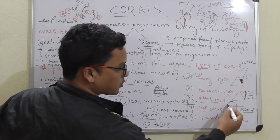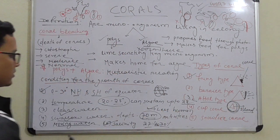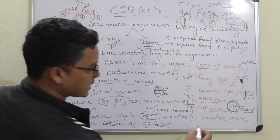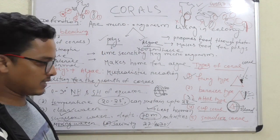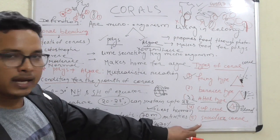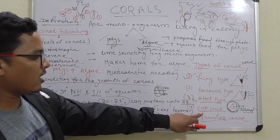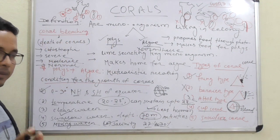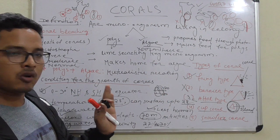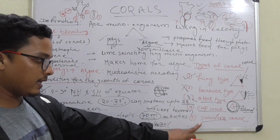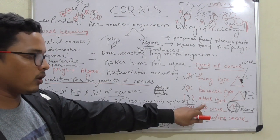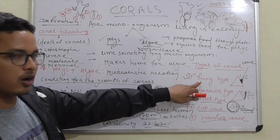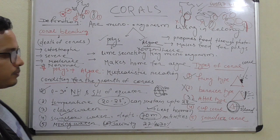Third is atoll type: circular corals, all around circular in shape. Fourth is cough coral: the shape of the corals is cup-shaped. Fifth is snowflake corals: these look like snowflakes and are found on the Kerala coast (Malabar coast). To summarize Indian distribution: snowflake in Kerala, cough corals in Gulf of Mannar, atoll in Lakshadweep, fringe in Gulf of Kachchh, Gulf of Mannar, and Andaman & Nicobar. Barrier type is NOT found in India.